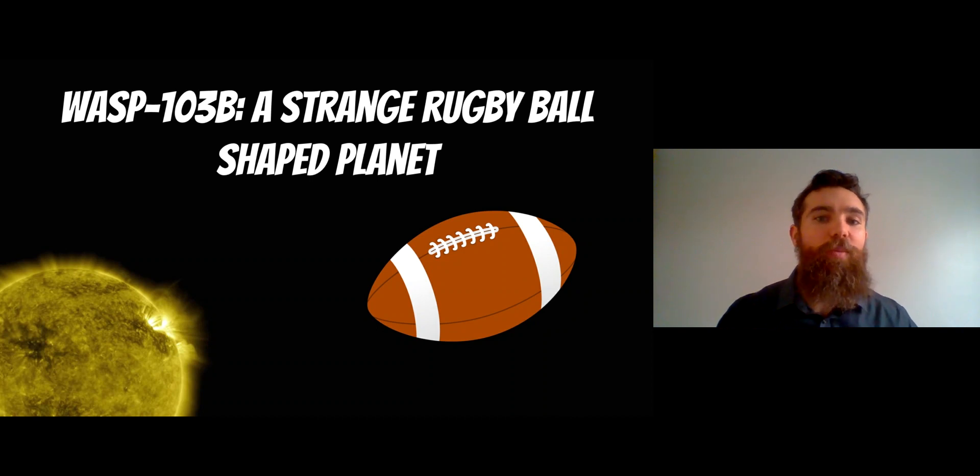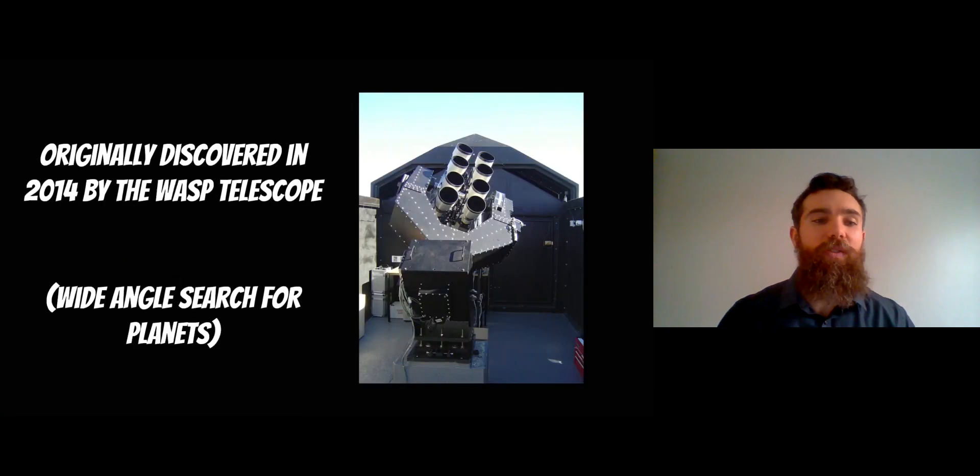Welcome to this video about a strange rugby ball shaped planet. This planet is known as WASP 103b and it was originally discovered in 2014 by the WASP telescope. The WASP stands for Wide Angle Search for Planets.